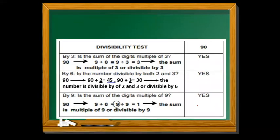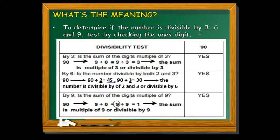Next is the divisibility test of 3. To determine if the number is divisible by 3, 6, and 9, we also check the digits. For divisibility by 3: is the sum of the digits a multiple of 3? For our given number 90, we add the digits: 9 plus 0 equals 9. Since 9 is divisible by 3, it means 90 is divisible by 3. It's a yes.